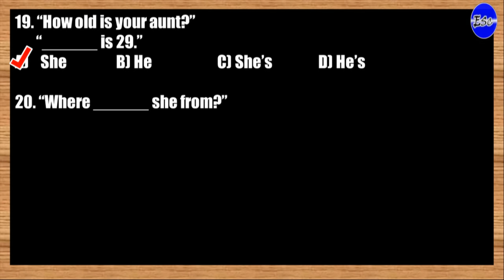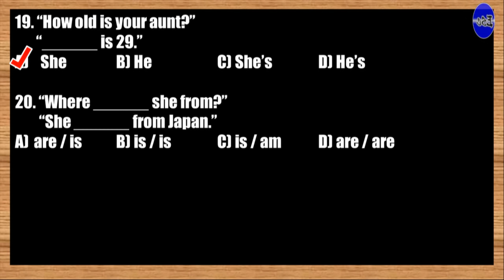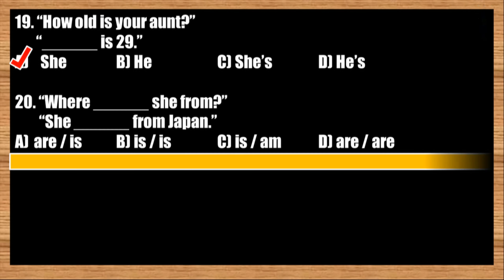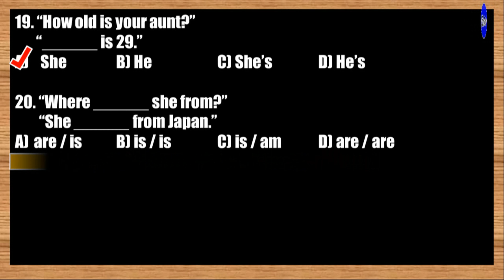Number twenty: Where blank she from? She blank from Japan. A: are, is; B: is, is; C: is, am; D: are, are. The best option is option B. Where is she from? She is from Japan.